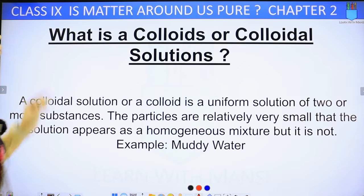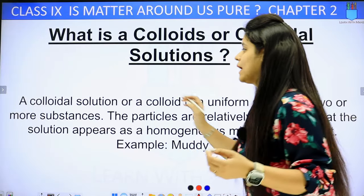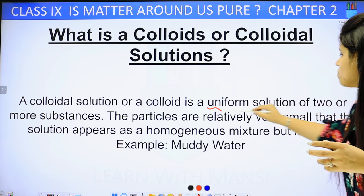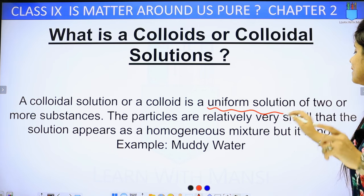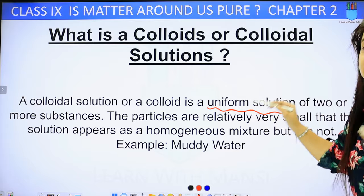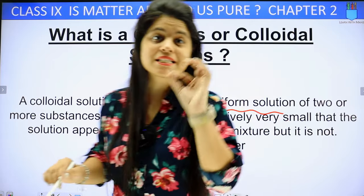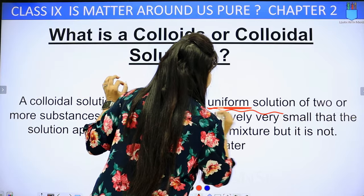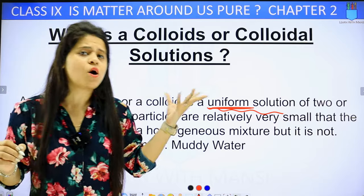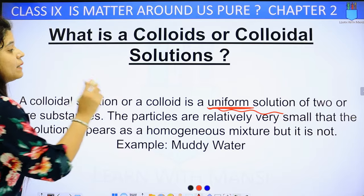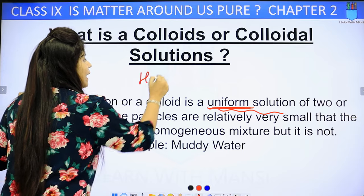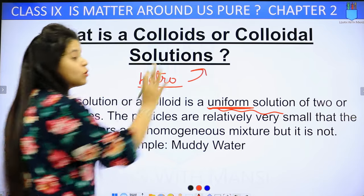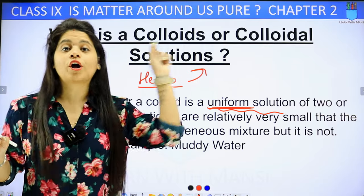Next, what is a colloid or colloidal solution? A colloidal solution or colloid is a uniform solution of two or more substances. The particles are relatively very small, so the solution appears as a homogeneous mixture — but it is not. The particles are so small that we cannot see that it is heterogeneous. But it is a heterogeneous mixture. Remember: both suspension and colloid are heterogeneous mixtures.